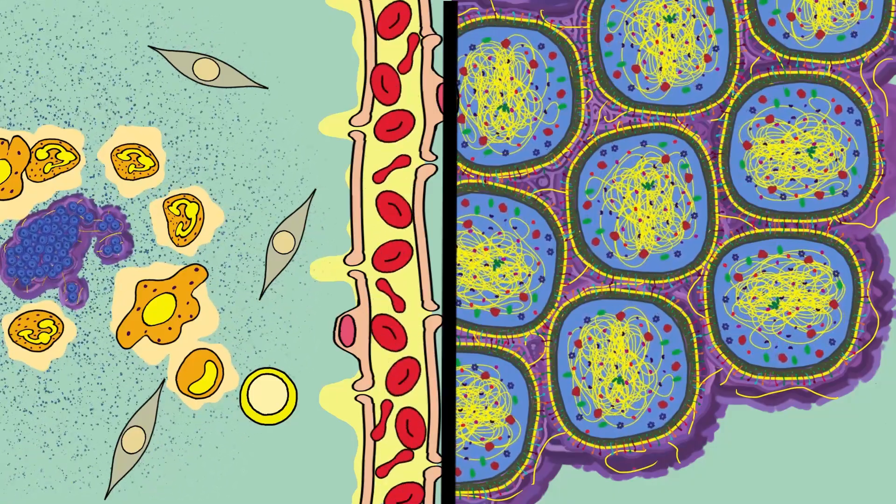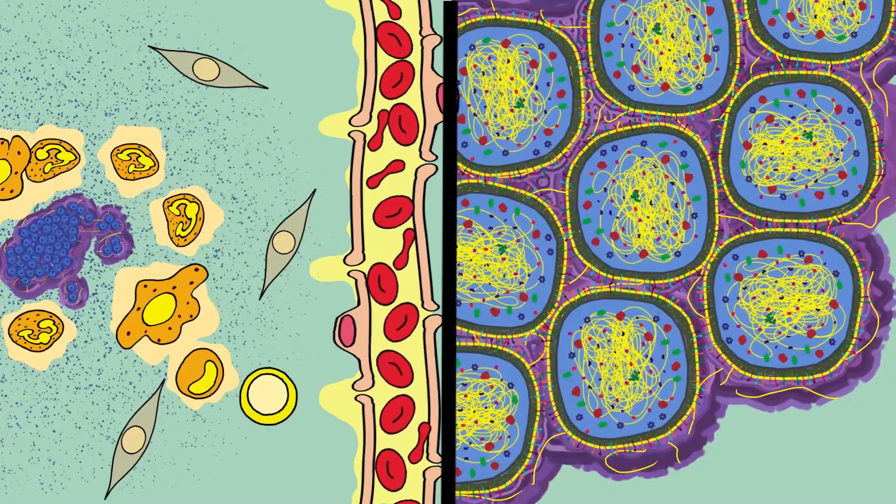Some of them rupture by osmotic pressure, and their contents serve as nutrients for the colony to feed.